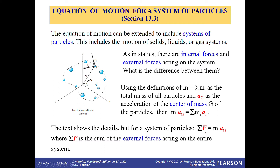For a system of particles, the equation becomes summation of F = M·AG, where summation of F is the sum of external forces on the entire system. For example, if a body consists of multiple particles (1, 2, 3, 4, 5, 6, etc.) in one system, we need to determine the center of mass G. The location of AG will be at that center of mass.